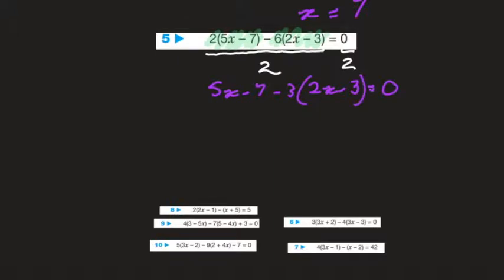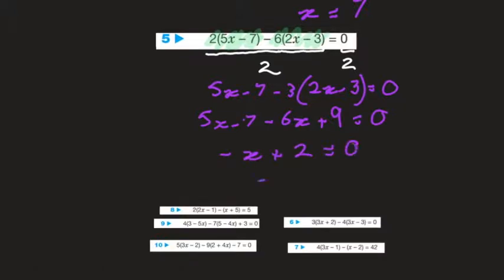Now we've got one bracket left: 5x minus 7, minus 3 times (2x minus 3) gives minus 6x plus 9. So 5x minus 6x is minus x, minus 7 plus 9 is plus 2, equals 0. Therefore minus x equals minus 2, and dividing both sides by minus 1, x is equal to 2.